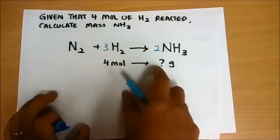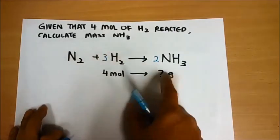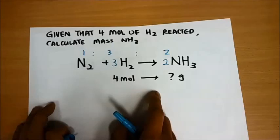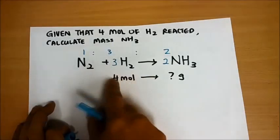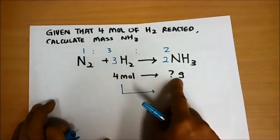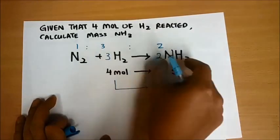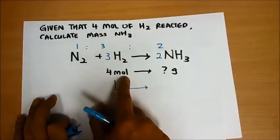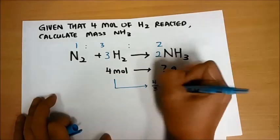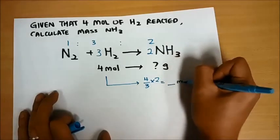Let's start with the question. You are given 4 moles of hydrogen gas that has reacted. Calculate the mass of NH3 formed. First, make sure the equation is balanced and then put up the general ratio. If I have 4 moles of hydrogen gas, step 1 — you can't say this is 4 moles, therefore this is 4 grams. It doesn't work that way because the ratio is different. You have to relate both substances based on the mole. So: 4 moles — find out how many moles of NH3 this gives. If this is 3 and this is 2, then 4 divided by 3 times 2.